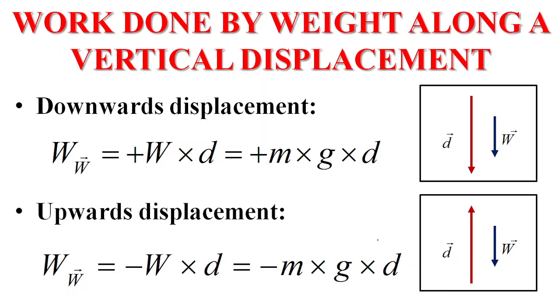Work done by weight along a vertical displacement. We know that weight is directed vertically downwards. If the displacement is downward, W and the displacement have the same direction. We know that work equals force times distance. But in this case, we are finding the work done by weight. We know that weight equals mass times gravity. So it is F times D, but the force is weight, which is mg. Therefore, in case of downward displacement, work done by weight equals mgd.